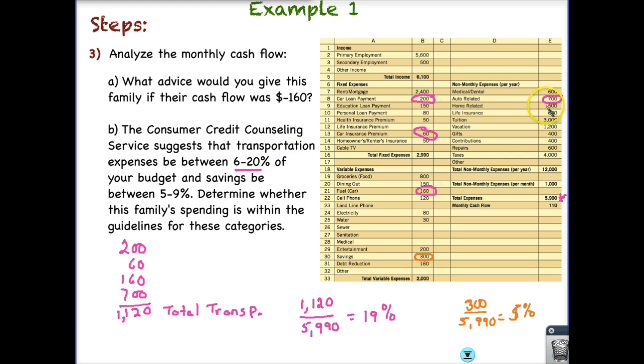And again, with transportation, we might want to look at what type of auto related expenses we have here. Obviously, if we pay off our car loan payment, that's really going to help us. So maybe we can pay that off sooner. It's going to be hard to change the car insurance premium. It's going to be hard to change fuel. But there are some things that we can adjust on our own or that can get adjusted as we pay them off.